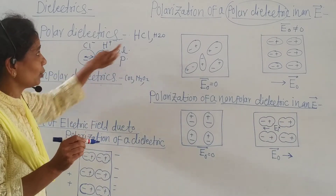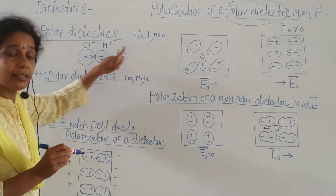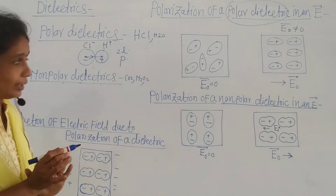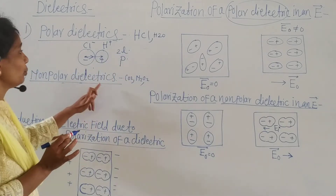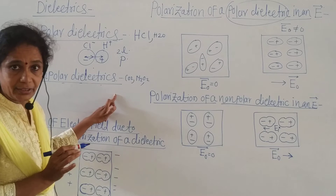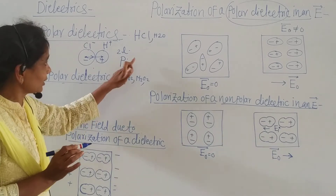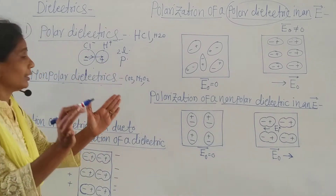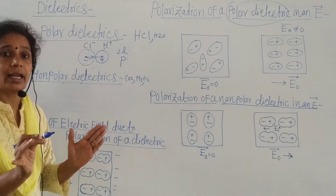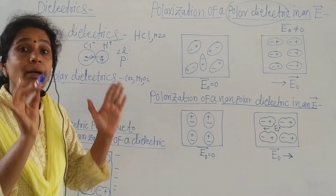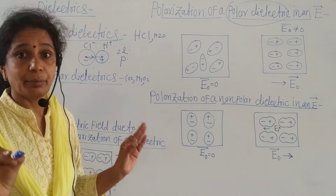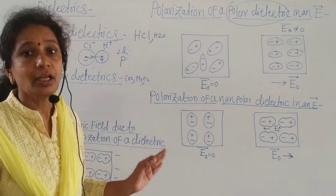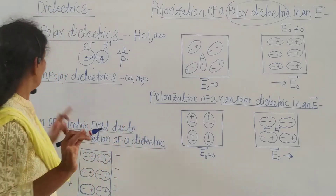This is the example of HCl, and similarly H₂O is also an example. In polar dielectrics, the two types — polar dielectrics have a permanent dipole moment due to the asymmetrical shape of the molecule.